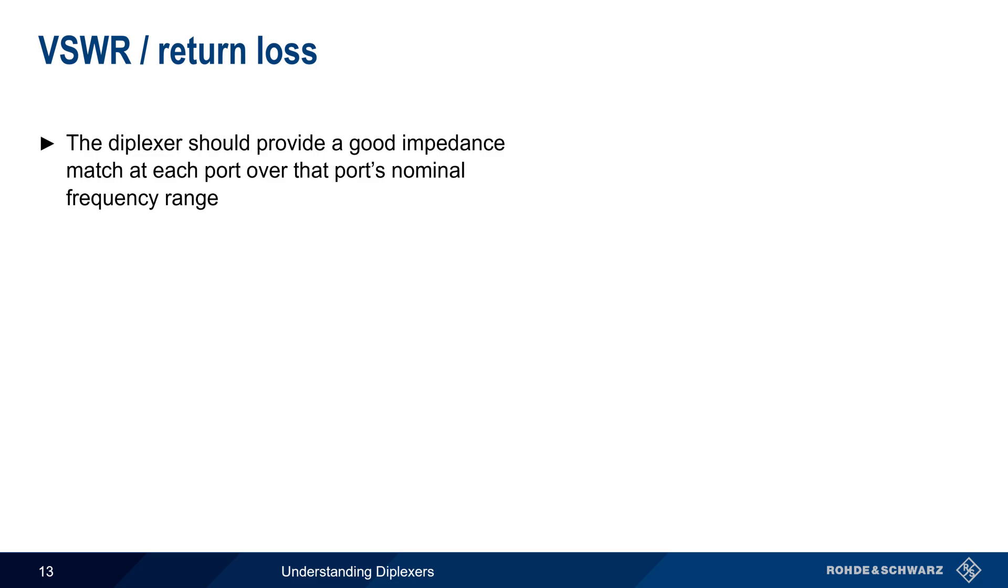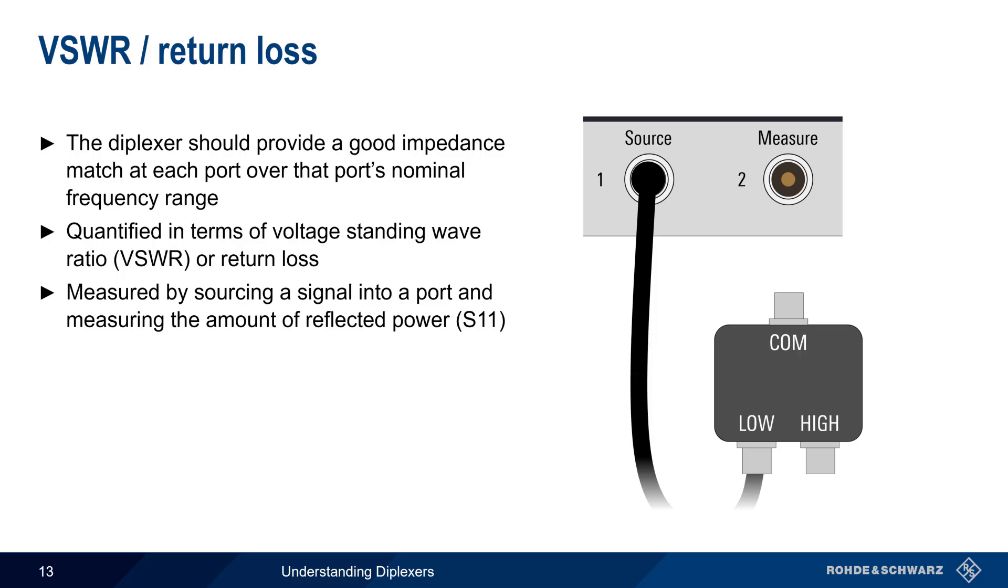A well-designed diplexer should also provide a good impedance match at all of its ports over each port's nominal frequency range. This is quantified in terms of return loss or voltage standing wave ratio. A simple formula can be used to convert return loss to VSWR and vice versa. To measure either of these quantities, a signal is sourced into one port of the diplexer and the amount of reflected power is measured.